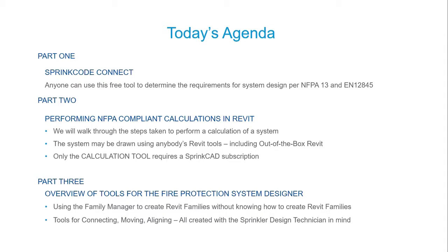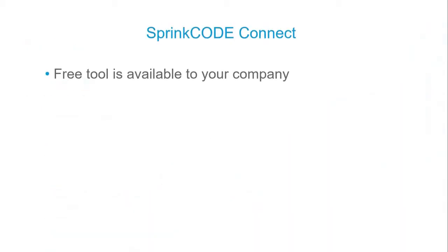In part two, we're going to go through the steps of performing a hydraulic calculation. The advantage is that the system can be drawn using anybody's Revit-based tools — Revit right out of the box. You can draw a fire sprinkler system, and if Revit thinks it's a fire sprinkler system, we can calculate it. The calculation tool requires a Sprinkhead license. We'll also look at a family manager for creating Revit families, and tools for moving and connecting sprinklers to pipe. Part one is a free tool, available to your company.